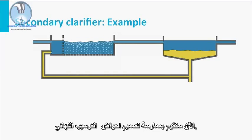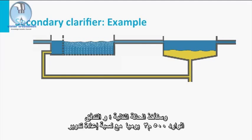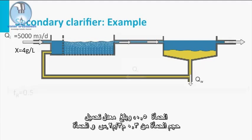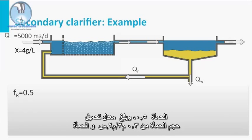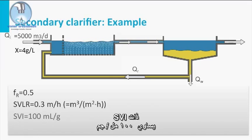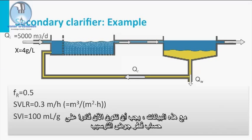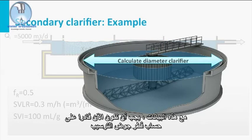Now we will practice designing a final clarifier. We take the following situation: an influent flow of 5,000 cubic meters per day combined with a sludge recycling ratio of 0.5, a given sludge volume loading rate of 0.3 cubic meters per square meter per hour, and the sludge has an SVI (sludge volume index) of 100 milliliters per gram. With these data, you should now be able to calculate the diameter of the settling tank.